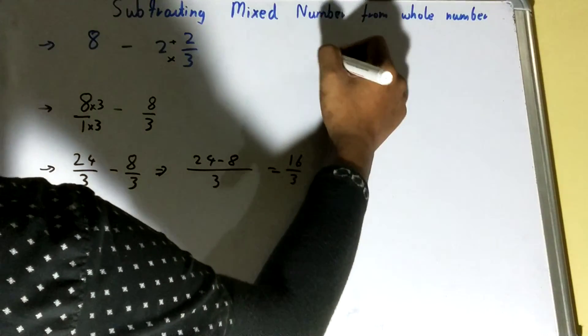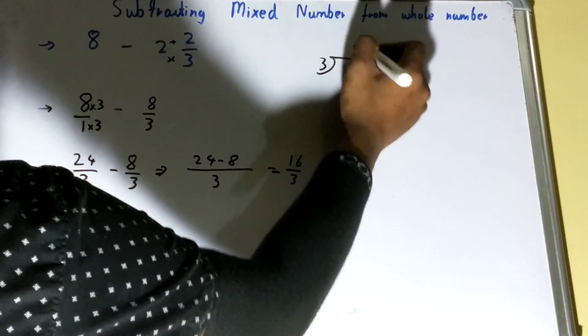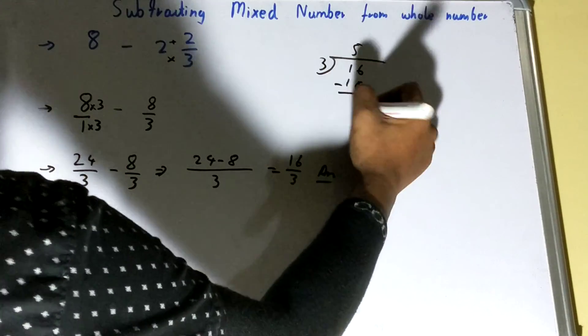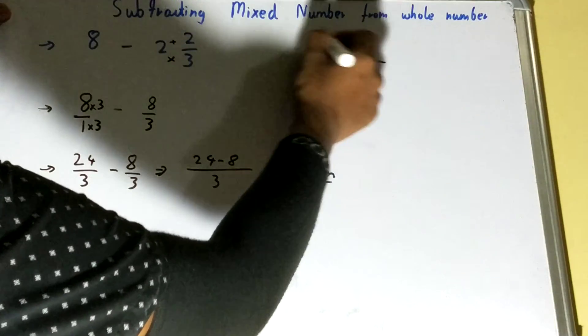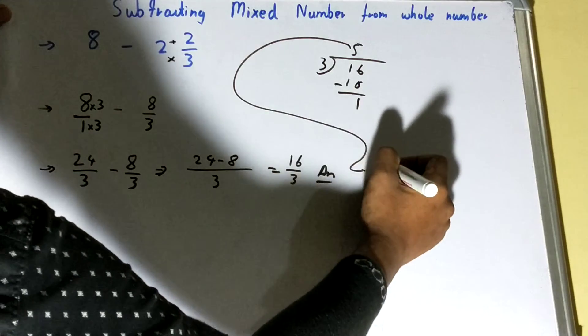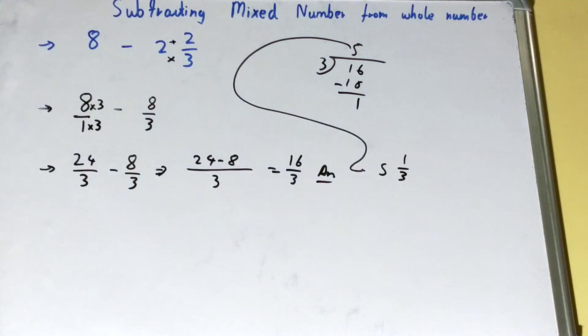If you want to convert it into a mixed fraction, you can do that by just performing division. That is 3 goes into 15 five times, minus 1. So I will place it like this: 5 and 1 by 3. So both are your answer - this is in mixed fraction and this is in improper fraction.